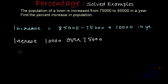So the percent increase will be 10,000 over 75,000. To convert this fraction into percent, we have to multiply it by 100. This is what we usually do. So if I want to express the increase as a fraction, it will be 10,000 divided by 75,000.